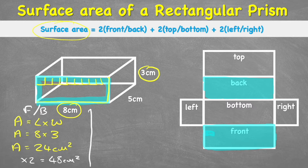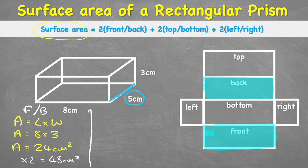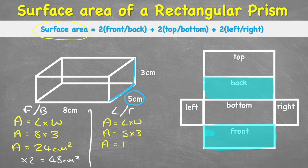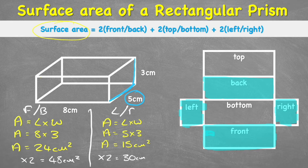Now let's do the left and right. We'll pick the right face. We use five centimeters for this edge and three centimeters for the height. Area equals length times width, so area equals five times three, which equals 15 centimeters squared. Multiplying by two for both left and right gives us 30 centimeters squared.